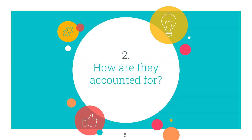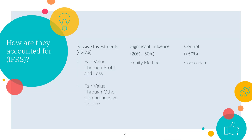Now let's talk about how to account for these investments. Under IFRS, if you have a passive investment — less than 20% ownership — you can choose one of two ways: fair value through profit and loss, or fair value through OCI. On a high level, this means that all the money you get from your investments goes through either your net income or your other comprehensive income.